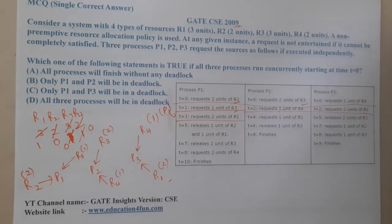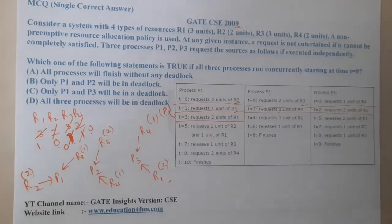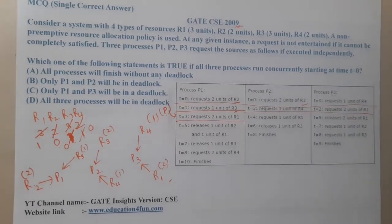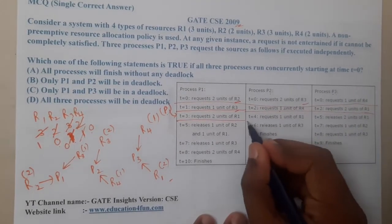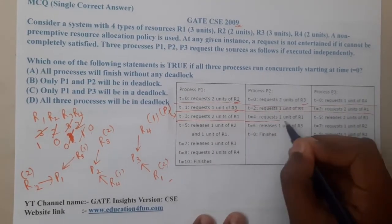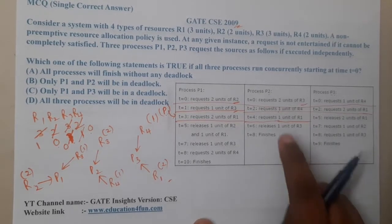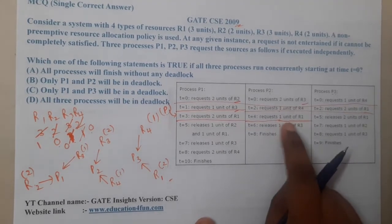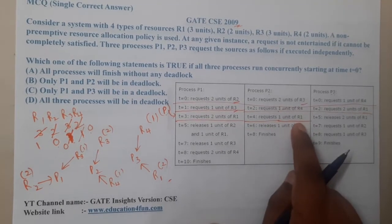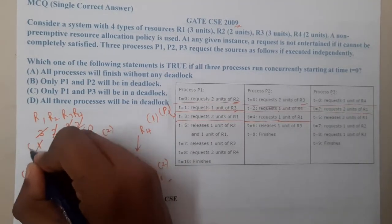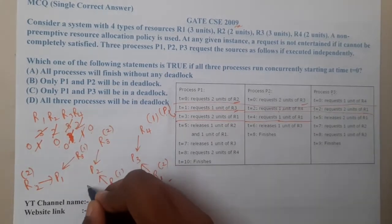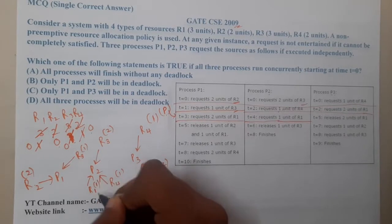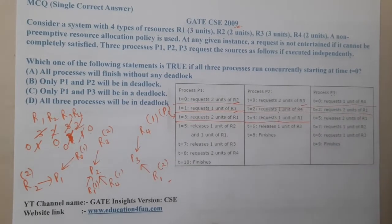The time rolls forward to t4. At t4, a request comes in for 1 unit of R1. The remaining 1 unit of R1 is given to this request, so R1 is now fully allocated. Everything up to this point is done.